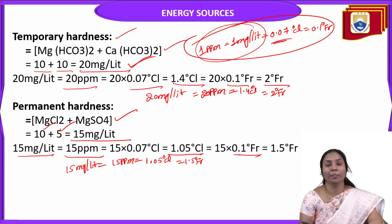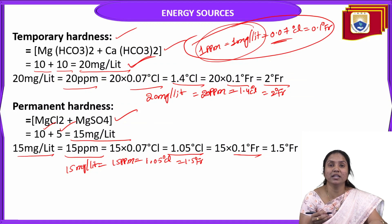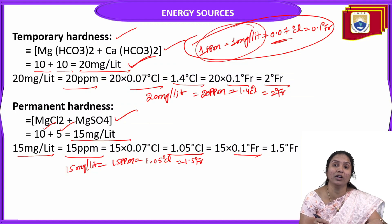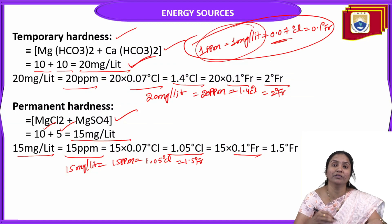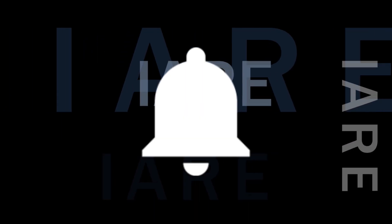In this way we can calculate temporary hardness, permanent hardness, and total hardness in degree of Clerk's, degree of French, and parts per million. The key steps are: remember molecular weights of hardness-causing salts, convert all salts to CaCO3 equivalent, identify temporary and permanent hardness salts, calculate the hardness values, then convert to the required units. Thank you — like, share, and subscribe, and hit the bell icon for more updates.